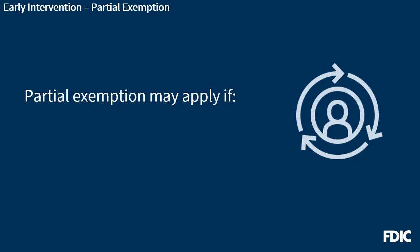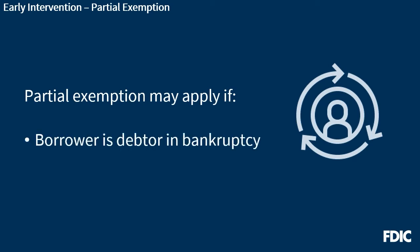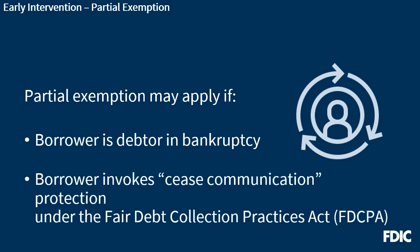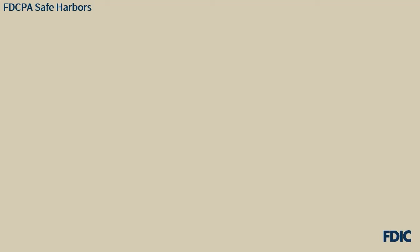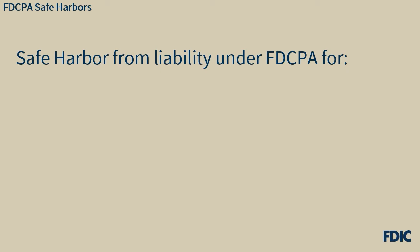Partial exemptions from early intervention live contact and written notice requirements may apply when any borrower on the mortgage loan is a debtor in bankruptcy or invokes the cease communication protections under the FDCPA. Special content and timing requirements apply in certain circumstances. There are certain FDCPA safe harbors for servicers communicating with borrowers, which may be useful for you to be aware of as you work with borrowers who are struggling to pay their mortgage.